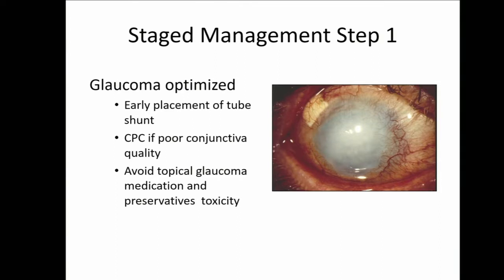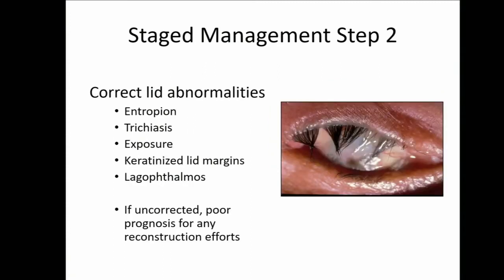In managing our cicatricial ocular patients: step one, glaucoma needs to be optimized — placing a tube shunt early on if possible if there's good conjunctiva, or CPC, and really avoiding toxicities from glaucoma medications and preservatives. Step two, you want to correct any lid abnormalities. This is a multidisciplinary effort. If any of these aspects are uncorrected, it's a very poor prognosis for reconstruction, because eyelashes will scrape the surface, exposure will dry it out, keratinized lid margins will scratch the eye surface, and any lagophthalmos needs to be corrected.